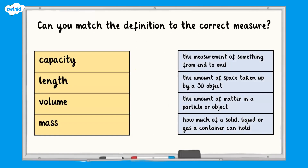Now it's your turn. Pause the screen and have a go at this question. Can you match the definition to the correct measure? You have capacity, length, volume, and mass to match: the measurement of something from end to end; the amount of space taken up by a 3D object; the amount of matter in a particle or object; and how much solid, liquid, or gas a container can hold.